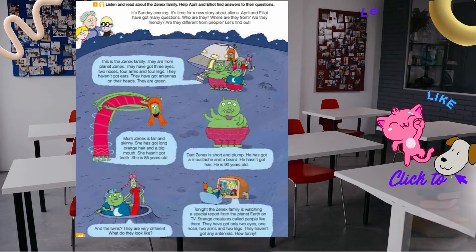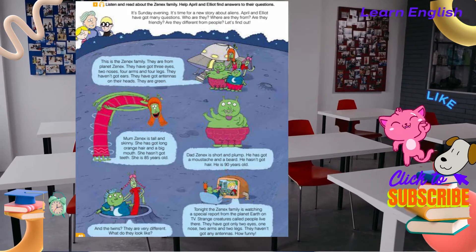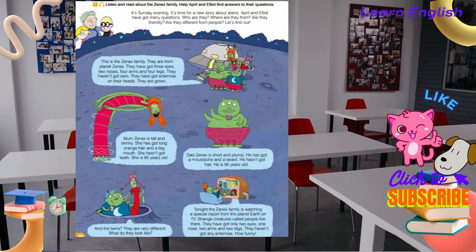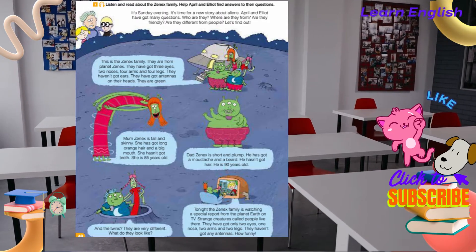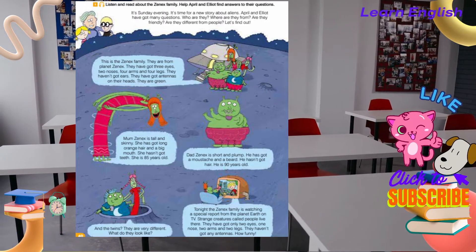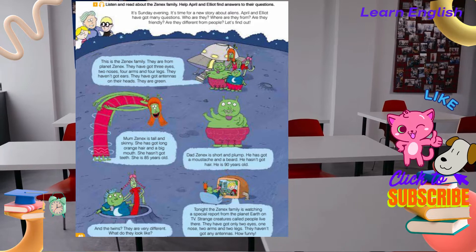Mum Xenex is tall and skinny. She has got long orange hair and a big mouth. She hasn't got teeth. She is 85 years old.